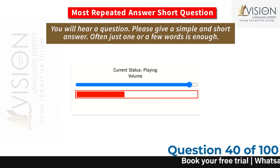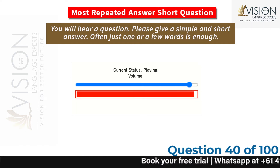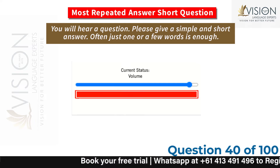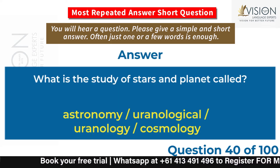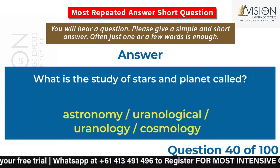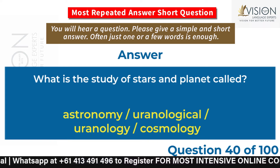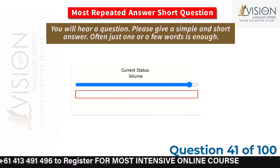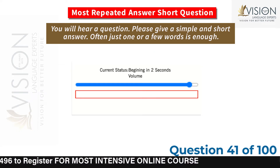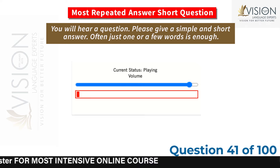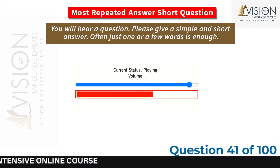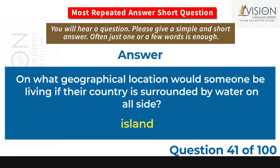What is the study of stars and planets called? Astronomy, cosmology. On what geographical location would someone be living if their country is surrounded by water on all sides? Island.